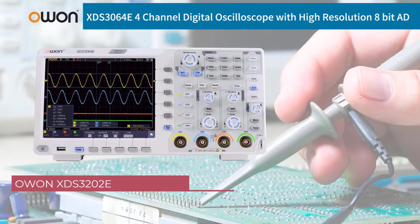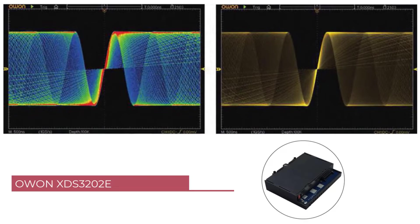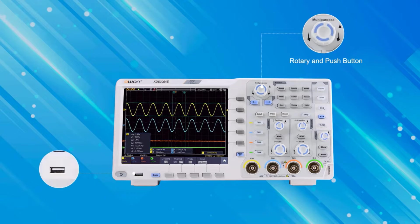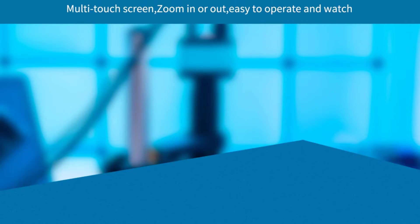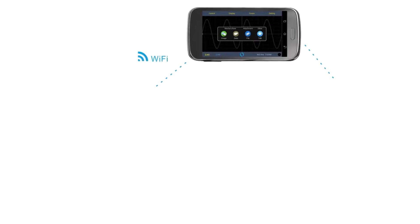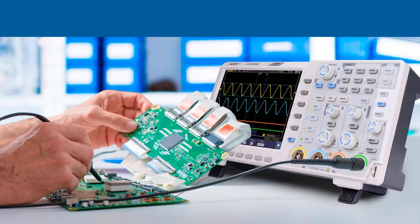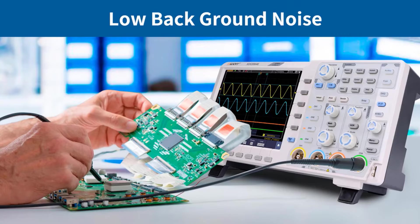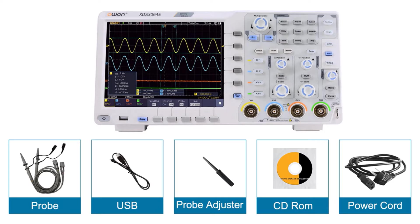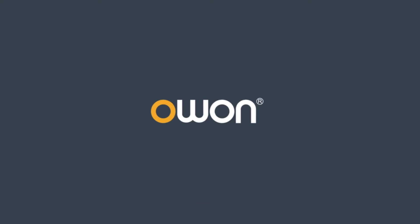Number 4: ONXDS-3202A Desktop Digital Oscilloscope. The ONXDS-3202A is a powerful tool that offers precision and reliability for electrical measurements and waveform analysis. With a real-time sampling rate of 1 GSA per second and a maximum waveform capture rate of 80,000 WFM per second, this oscilloscope ensures that even the most intricate waveform details are captured accurately.